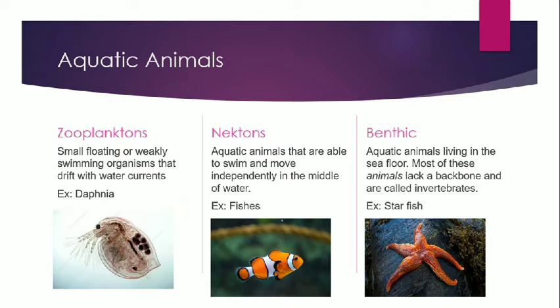Zooplanktons are extremely small animals found on the surface of water. They are found along phytoplanktons and are light in weight so they can easily be carried away by water drift. For example, Daphnia. Nectons are those animals found in the middle of the water that swim independently — for example, fishes. Benthic are those animals found on the ground surface of seas and rivers — for example, invertebrates, and a common example is starfish.